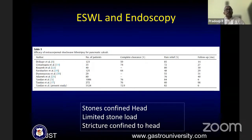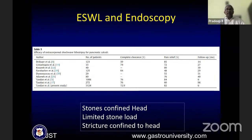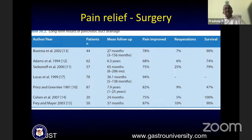Looking at ESWL and endoscopy results — most studies show very good short-term pain relief, but when you look at long-term outcomes, pain relief drops significantly to less than 60%. One should realize that short-term pain relief with endotherapy is good, particularly when the stone is confined to the head with a limited stone load and stricture confined to the head. A large stone load across the whole pancreas is not ideal for ESWL or endoscopy. Conventional surgical long-term results are very good, around 90%. We should compare long-term results of surgery versus endotherapy, where endotherapy long-term results are not as good.